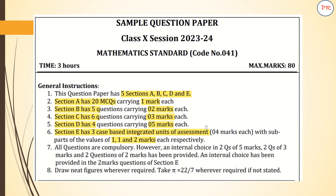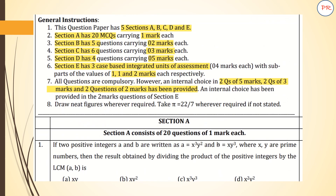Section E will actually be paragraph-based questions. All the questions are compulsory. However, an internal choice is provided for 2 questions of 5 marks, 2 questions of 3 marks, and 2 questions of 2 marks. This is very important, because you will get an idea of what kind of question paper you are going to face at the end. That's why they have provided this sample question paper at the beginning.